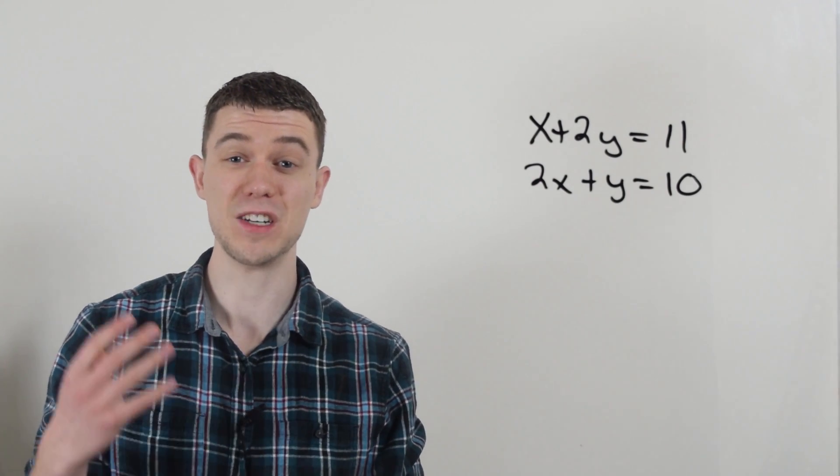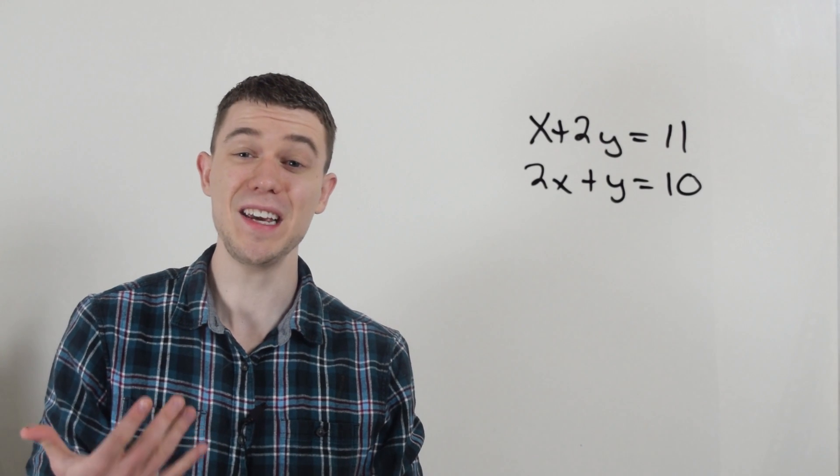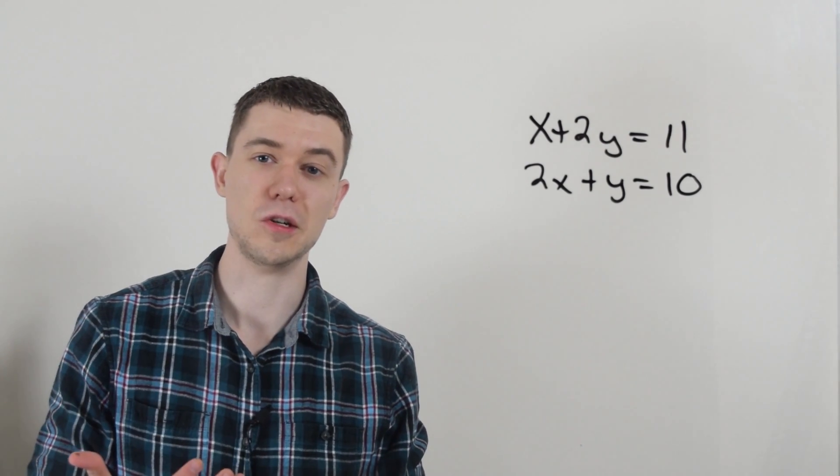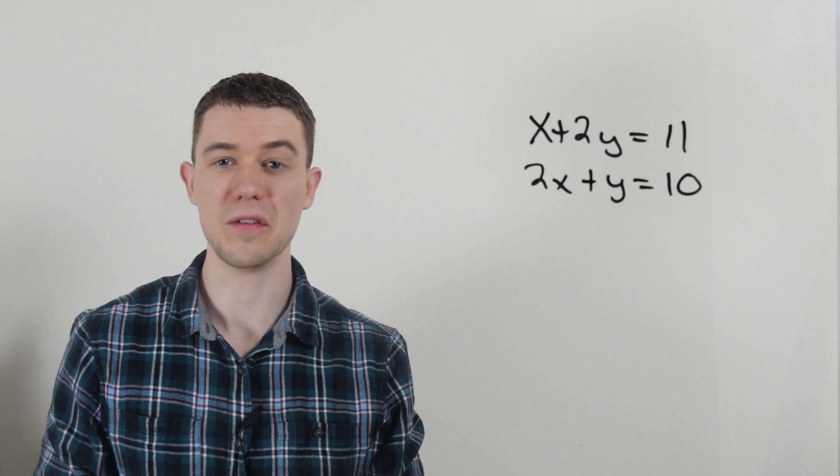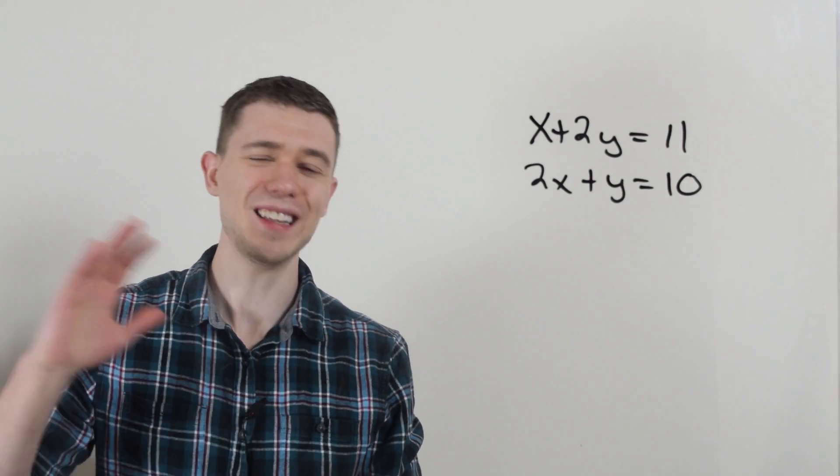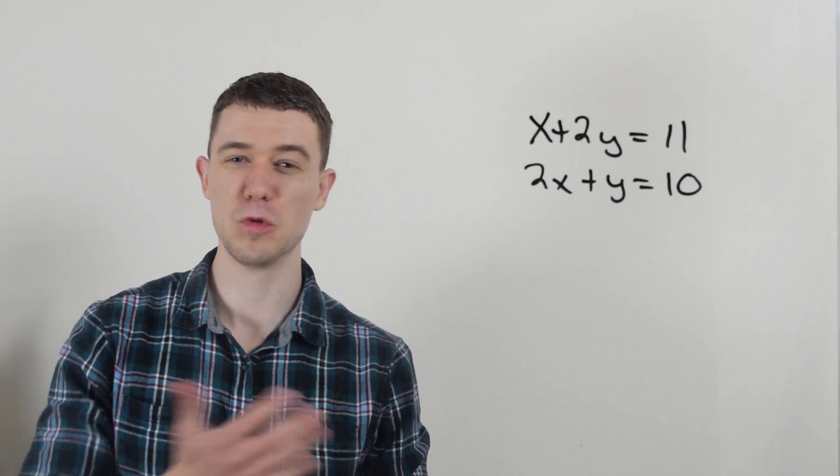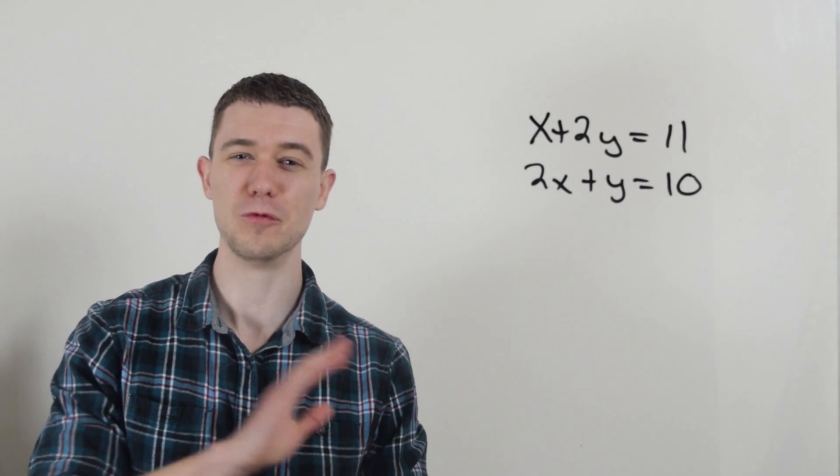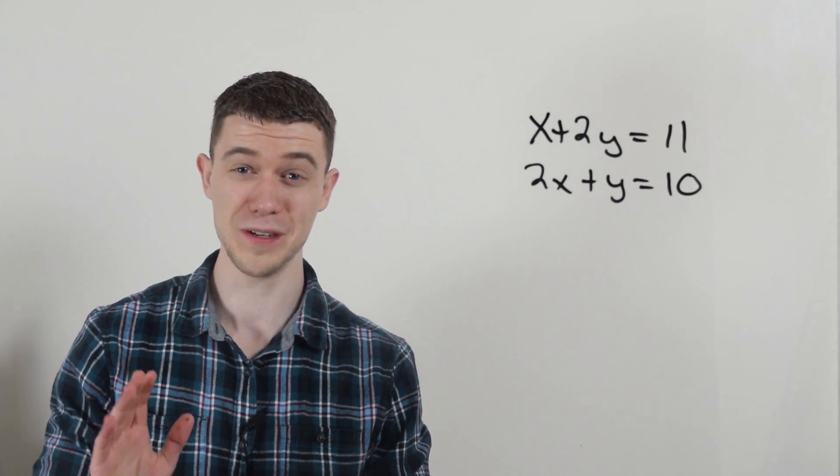And the traditional way that you solve this is either by what's called elimination or by substitution. Basically, you solve for one of the variables in one equation, and you plug it into the other equation. It's a lot of work. So with this method, we're just going to skip all that. We're just going to skip right to the answer. Alright, are you ready for it? So here we go.